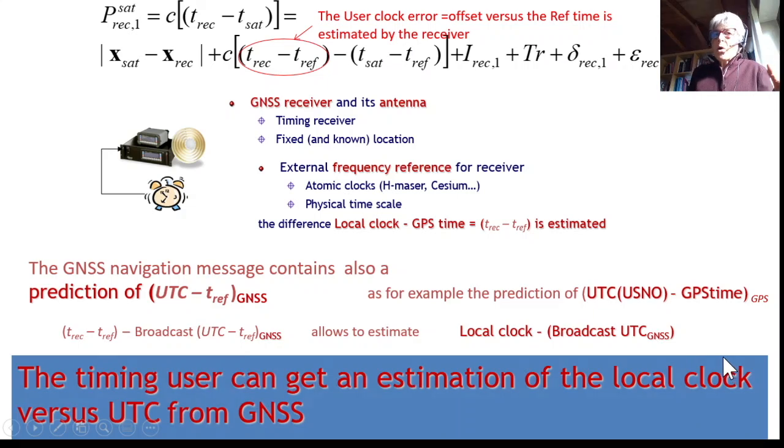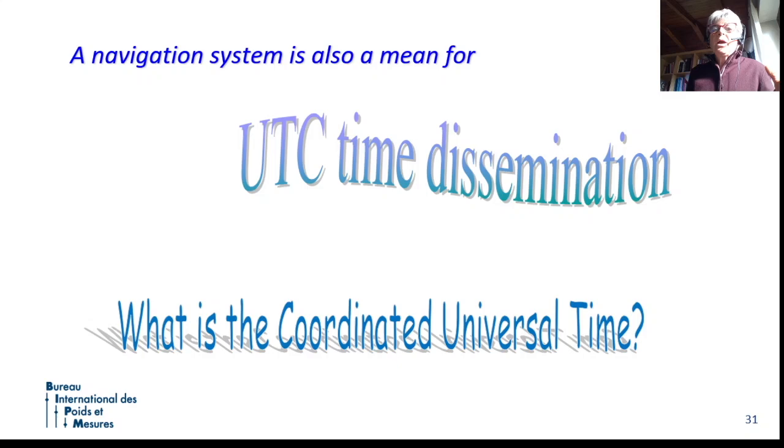So, this is how a user can get access to UTC through the GNSS timing dissemination service. So, you can have access to UTC. UTC is disseminated by GNSS. We have seen the effect of clock and timekeeping in navigation system. Now, let's go to the metrological side and say UTC, Coordinated Universal Time. What is it? And let's see what we can discover about that.